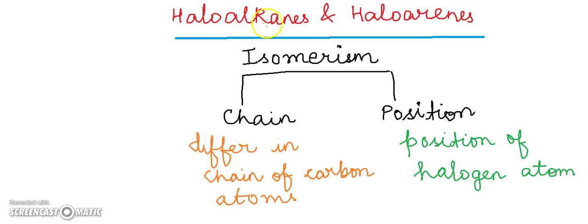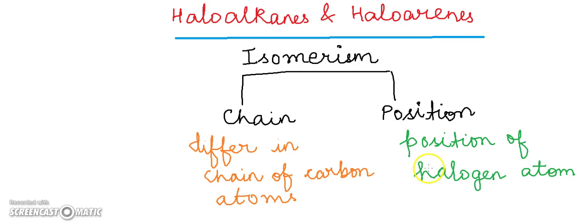Welcome to chemistry class. Today we are going to learn isomerism in haloalkanes and haloarenes. Haloalkanes show two types of isomerism: chain and position. Chain isomerism is seen in haloalkanes containing four or more carbon atoms, where the isomers differ in the carbon chain. Position isomerism is seen in haloalkanes containing three or more carbon atoms, where the isomers differ in the position of the halogen atom.